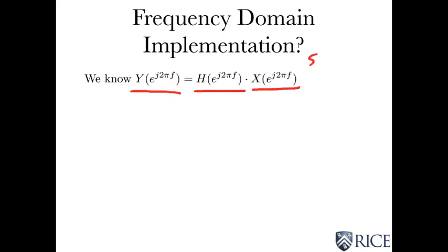However, as we've talked about, you actually can't compute these things because of the frequency variable F. That's the stumbling block. F has an accountably infinite number of values you'd have to compute it for, and you can never get there. So we have to use the DFT.